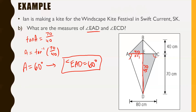For angle ECD, the opposite side is also 70 and the adjacent side is also 40 — the exact same opposite and adjacent ratio. So we can skip the calculation and say angle ECD equals 60 degrees as well.